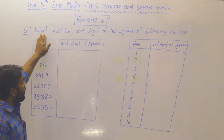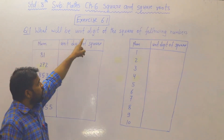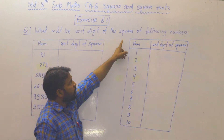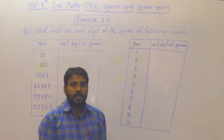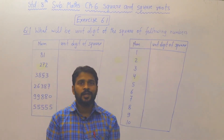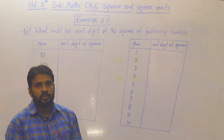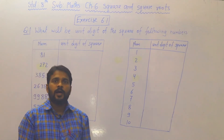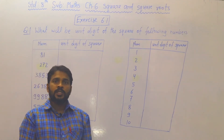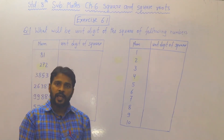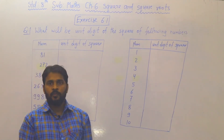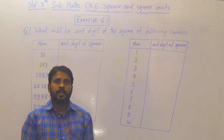Question यह है: What will be the unit digit of square of the following numbers? आपको कुछ numbers given हैं. उनका square करने के बाद उस square का unit digit क्या आता है, वो find करना है.